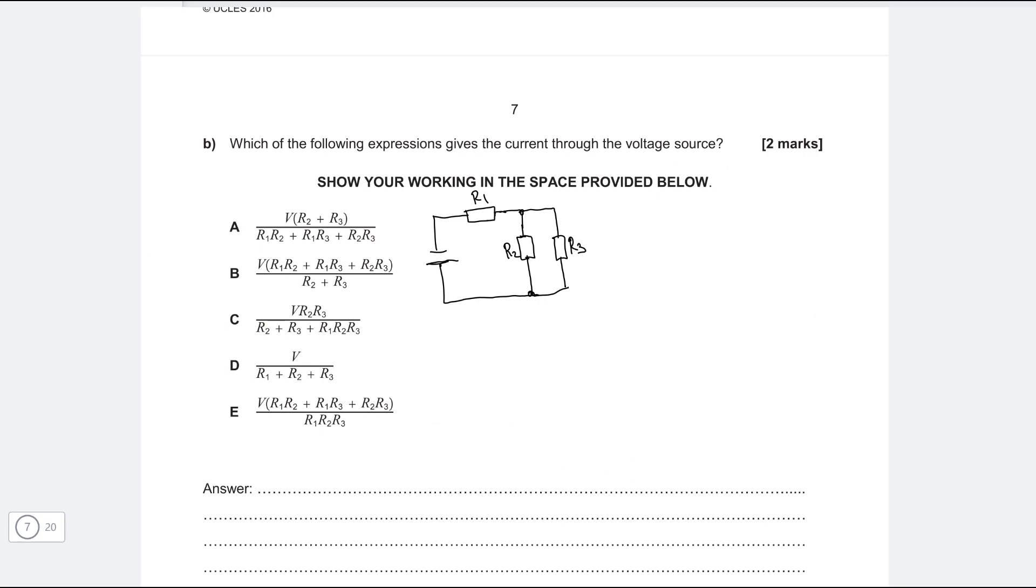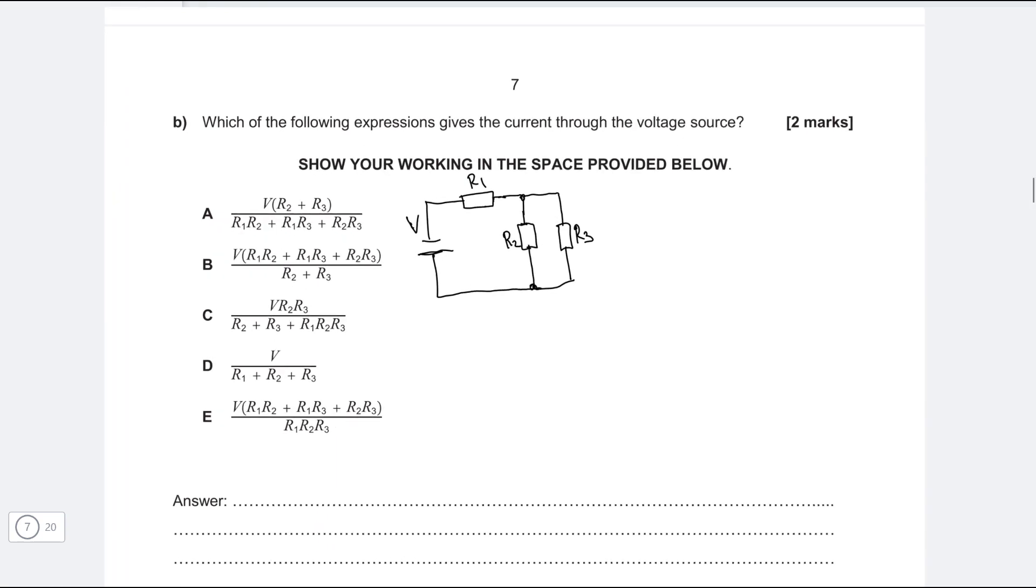Okay, part B, which of the following expression gives the correct current through the voltage source? So if we have a voltage V across here, which one of those expressions will give us the current?